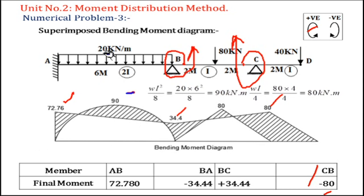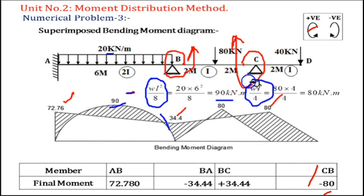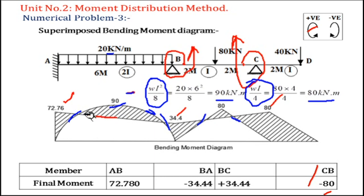Now for the free bending moment diagram: the load for AB is 20 kN/m UDL, so the equation is WL squared by 8. W is 20, span is 6, so 20 × 6² / 8 gives 90 kNm. Draw this as a parabola with maximum 90. For the point load, the equation is WL by 4, giving 80 × 4 / 4 = 80 kNm. Draw this in triangular fashion with peak 80.